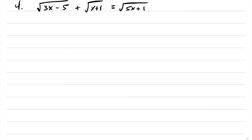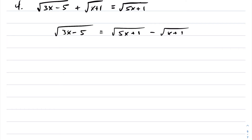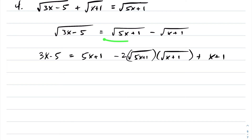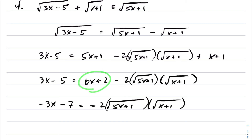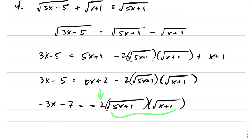In the next equation, we have three radicals to solve. The strategy is to isolate one of the radicals and then square both sides. I'm going to isolate for the square root of 3x minus 5 and square both sides. When squaring, you square the first term giving 5x plus 1, then first times second times 2, and squaring the last term we lose the root on x plus 1. Collecting like terms and bringing all non-radical terms to one side, on the right-hand side I get 6x plus 2, giving us negative 3x minus 7 equals negative 2 times the product of these two radicals. We've essentially isolated one radical, so I'll square both sides again.